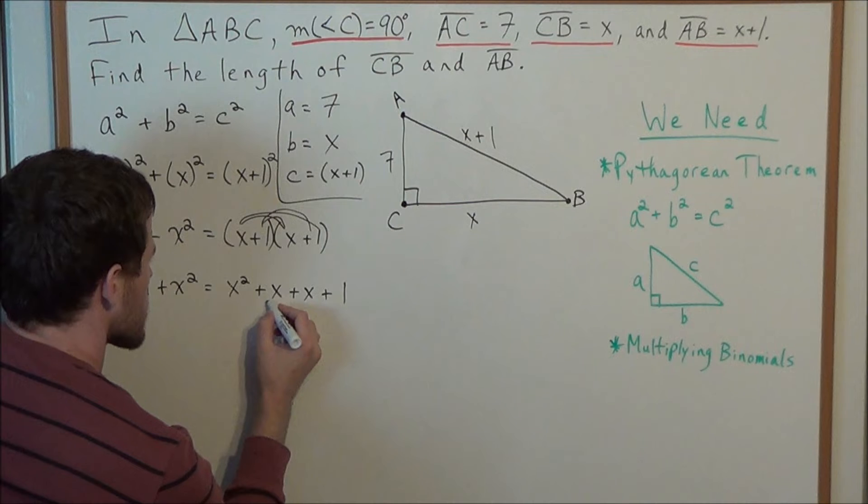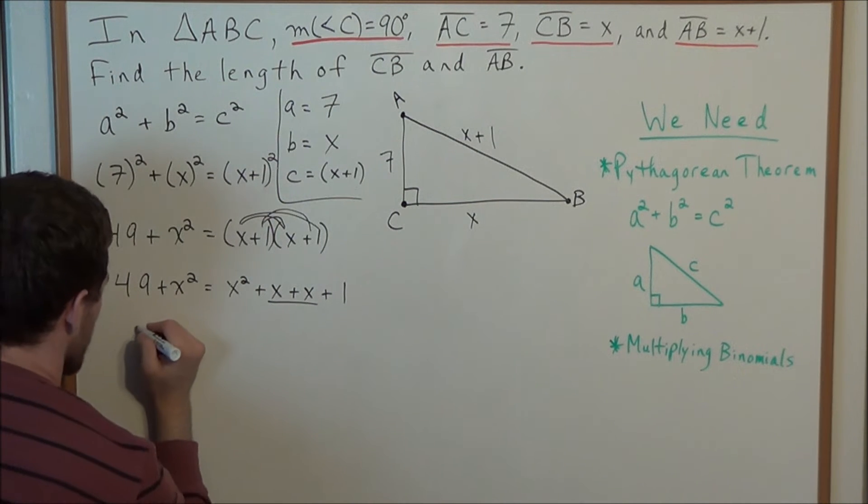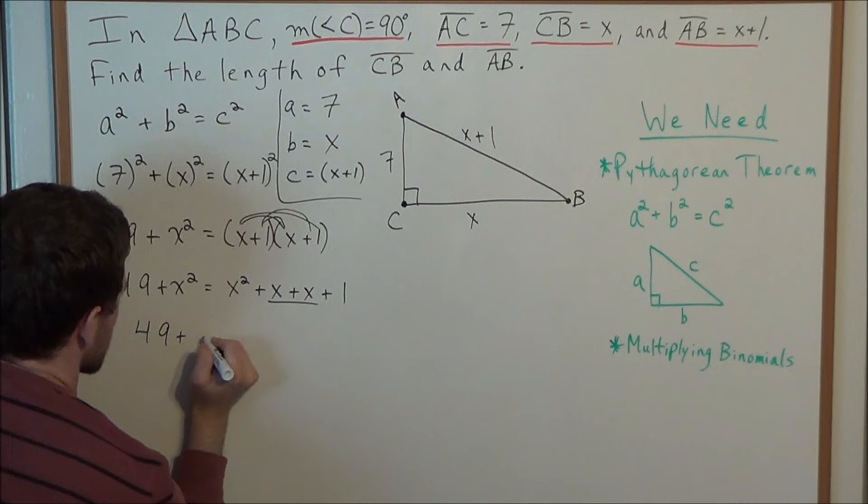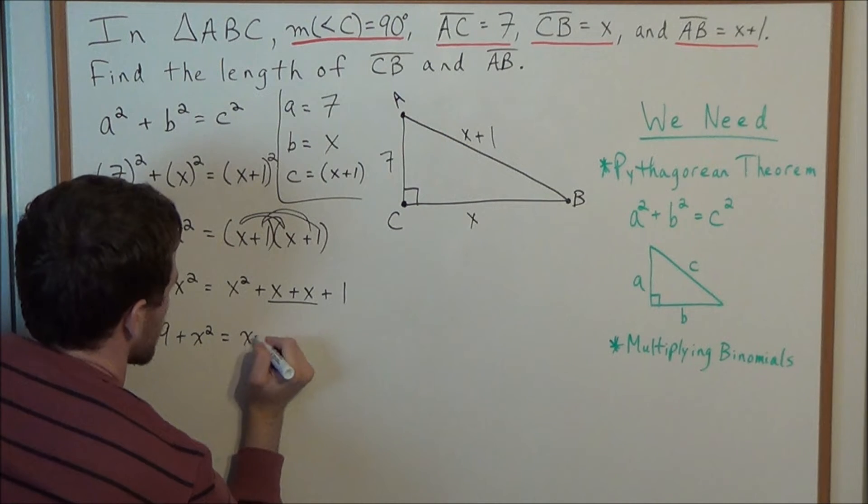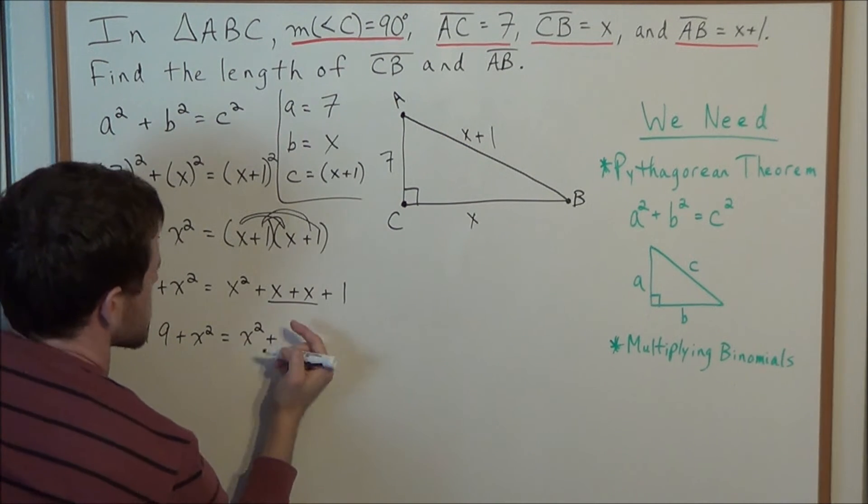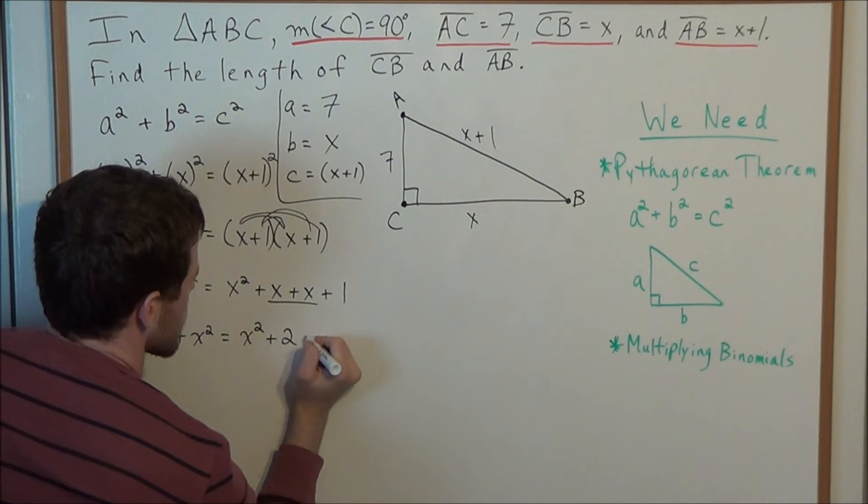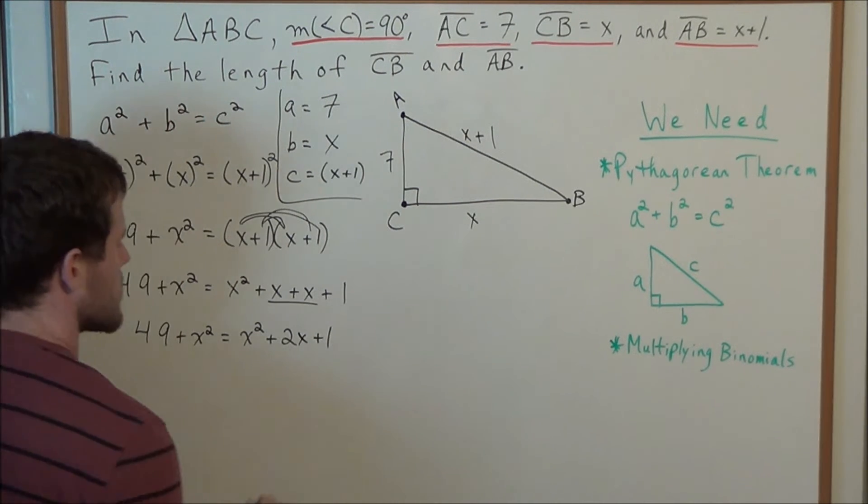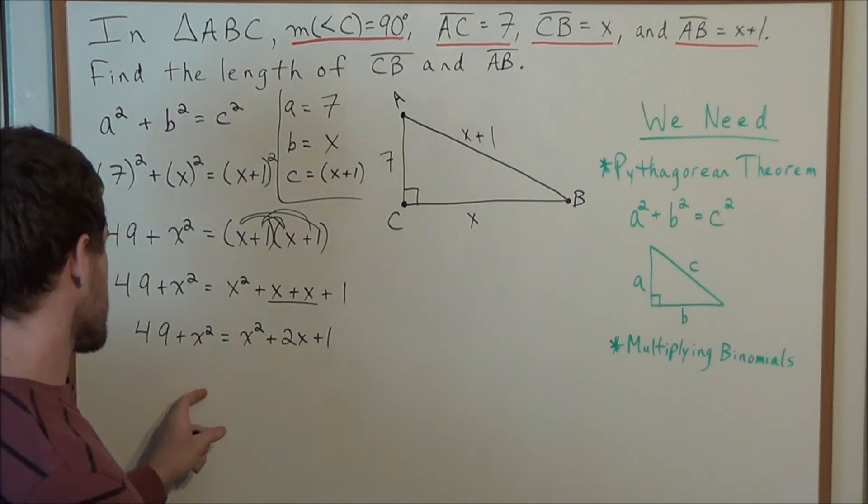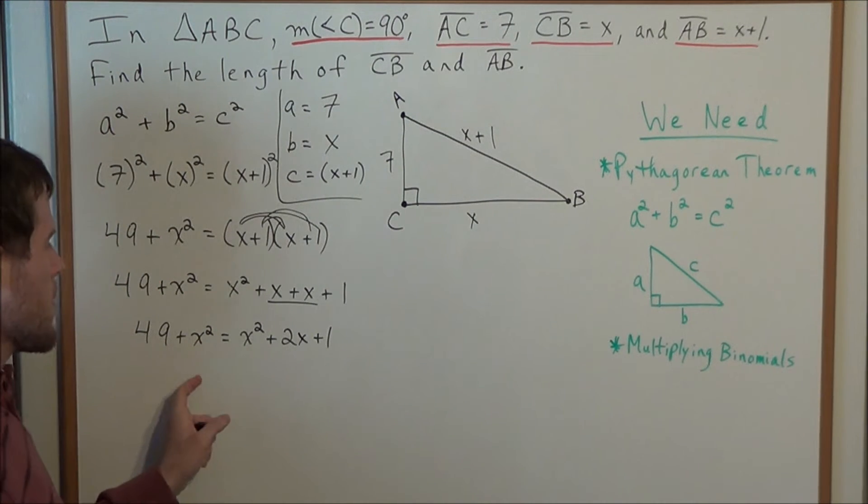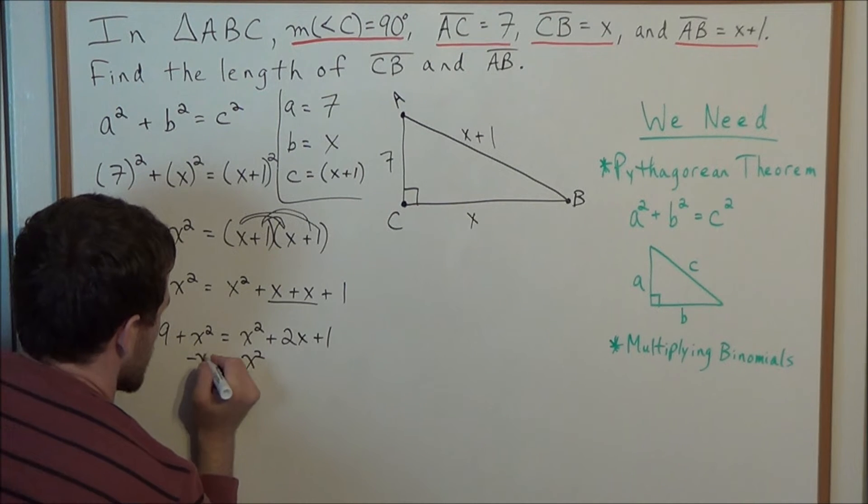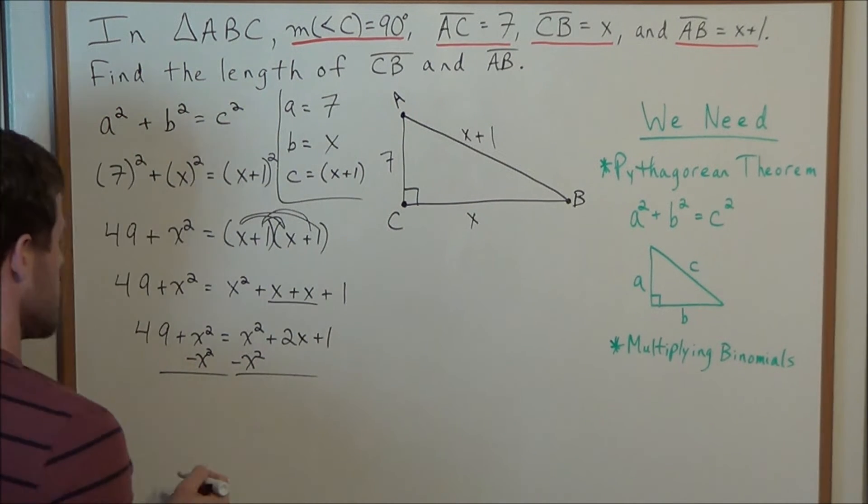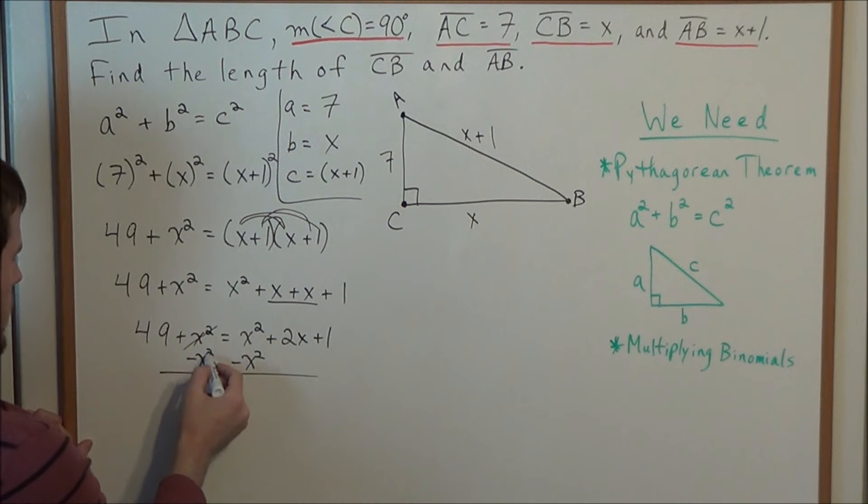And now we could combine like terms. So in the next line we have 49 plus X squared equals, and we have X squared plus X plus X is 2X. So we have 2X plus 1. And now to solve for X, well we have a common X squared on both sides. So we could subtract X squared from both sides.